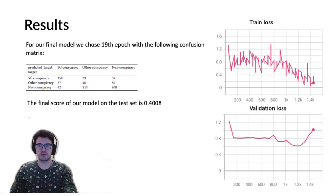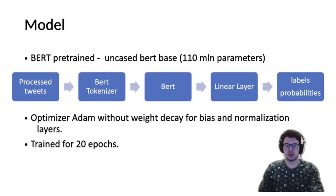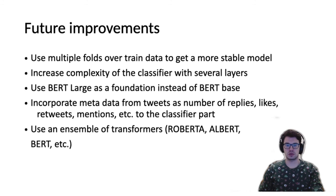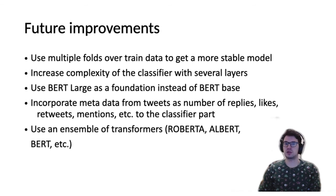The final score on the test set, computed by Medieval, was 40%. Of course, we can improve further and we have several thoughts on how to do it. First, we can use multiple folds to make a more stable model. We can increase the complexity of the classifier to several layers instead of one. We can use BERT-Large and also incorporate extra meta-information from tweets like likes, replies, etc. And we can use an ensemble of several transformers: RoBERTa, ALBERT, BERT, and so on.